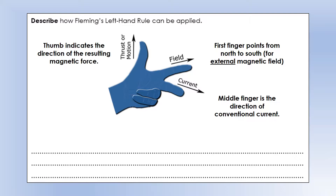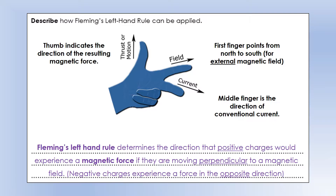We can apply this when the charges are moving perpendicular to the magnetic field — that's the condition that allows us to apply Fleming's Left Hand Rule.